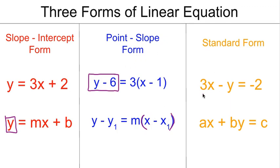In standard form, the key feature is that x and y are going to be on the same side of the equation. If you'll notice in point-slope form, y and x are on different sides, and in slope-intercept form, they are on different sides as well.